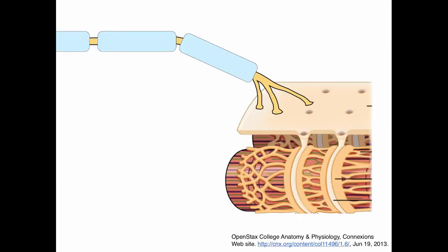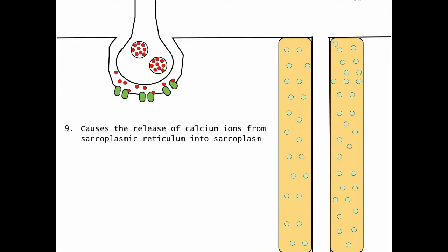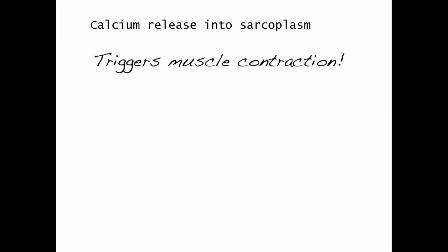In a previous video, we covered how an action potential travels down the motor neuron to the neuromuscular junction. From the neuromuscular junction, the action potential will travel across the sarcolemma and down the T-tubule. As the action potential travels down the T-tubule, this causes the release of calcium from the sarcoplasmic reticulum into the sarcoplasm. I left off the previous video indicating that calcium released into the sarcoplasm is going to trigger muscle contraction. That's where we'll start today.